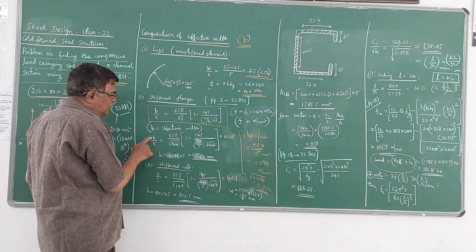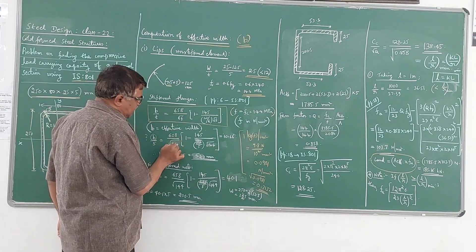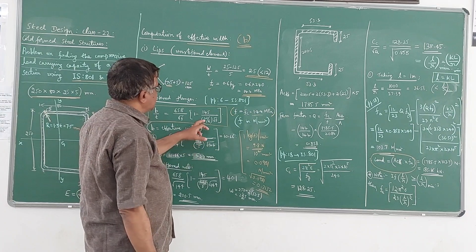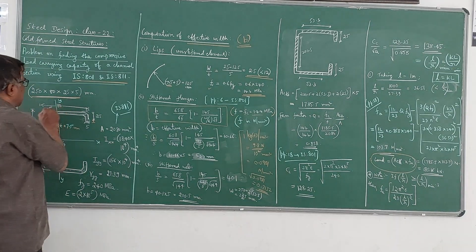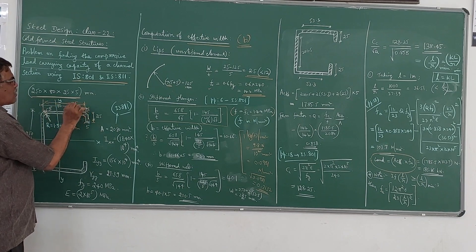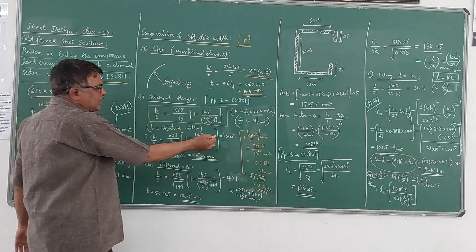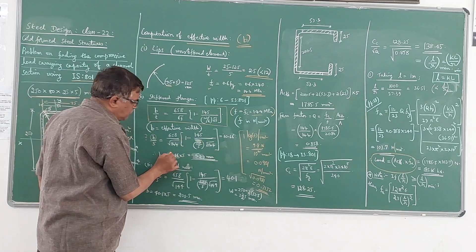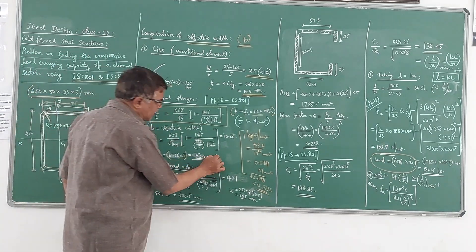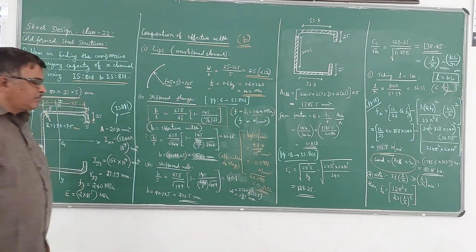Using this formula with thickness T = 5 mm, B/T = 658/√144 × (1 − 145/(W/T × √144)). The flange width, taken center to center, is 75 mm, so W/T = 75/5 = 15. Simplifying gives B/T = 10.66, therefore B = 10.66 × 5 = 53.3 mm. So the effective width of one flange is 53.3 mm.